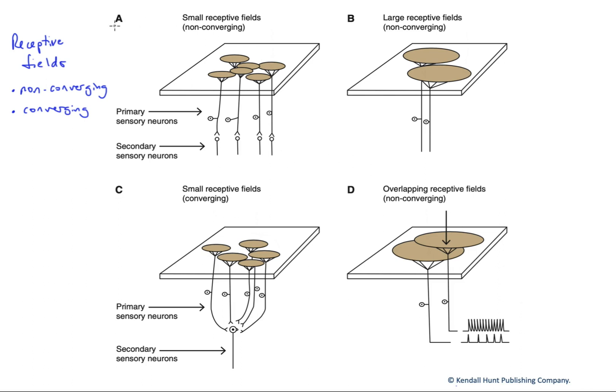In A here, we have a scenario with small receptive fields. This shaded area of each neuron is the area to which it will be receptive to a stimulus. If we think of these as tactile receptors in your skin, each of these individual receptive fields can respond to stimuli separately. And because they are non-converging, these neurons are keeping their information separate from those adjacent to it.